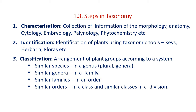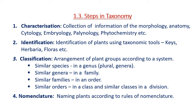The third step is classification — the arrangement of plants or plant groups according to a system of classification. Similar species are put in a single genus; similarly, similar genera are put in a family, similar families in an order, similar orders in a class, and similar classes in a division, and so on. The fourth step is nomenclature — naming plants according to the rules of nomenclature.